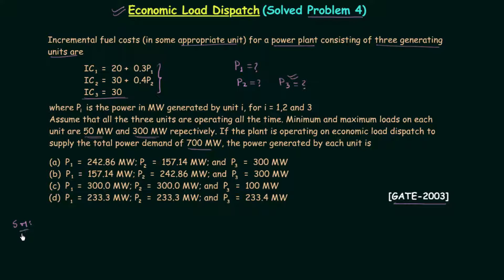From the lecture on economic load dispatch, if the incremental cost is constant we always load that particular generator the most. Here IC3 equals 30, meaning the incremental cost of the third generator does not change with power. So we will load the third generator to its maximum of 300 megawatt.